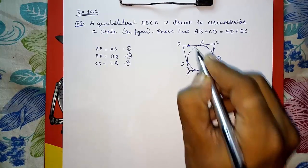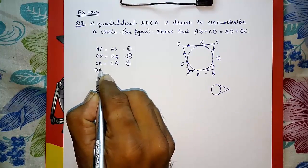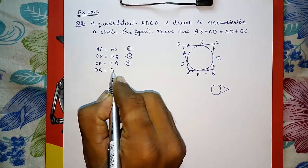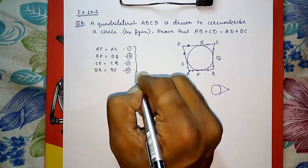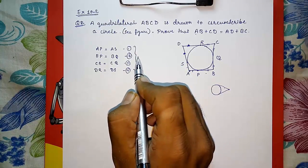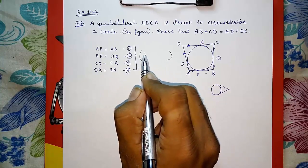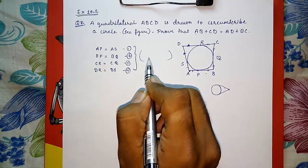Now DR equals to DS. I am going to write DR here. DR equals to DS, result number four. Same reason for all of these. The tangents from exterior points are equidistant. You can write: tangents from an exterior point are equidistant to a circle.